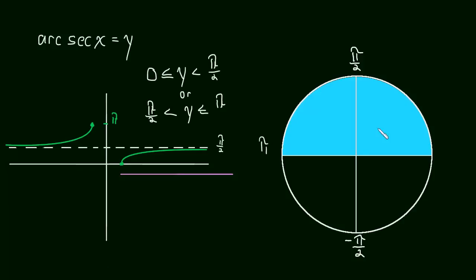If y is in this first quadrant, then secant is positive, secant of y is positive, and tangent of y is positive. So if y is somewhere in here, both are positive. If y is in this second quadrant, then secant of y is negative, and tangent of y is negative.